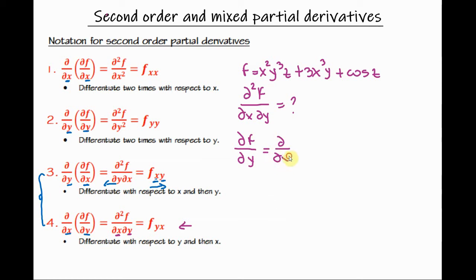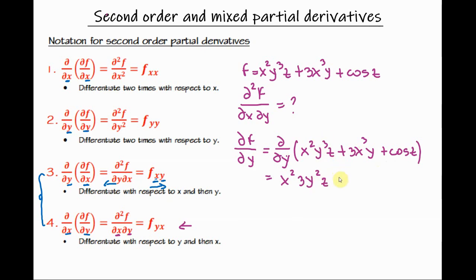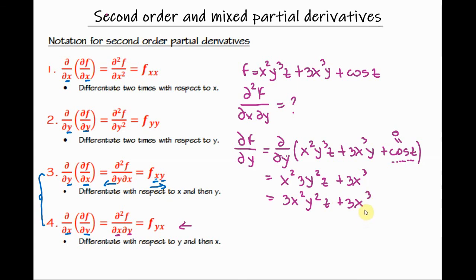Rewriting the function: x squared is a constant, the derivative of y cubed is 3y squared, and z is a constant. Next, 3x cubed is a constant and the derivative of y is simply 1, so we don't write it. For the cosine z term, since we are differentiating with respect to y, cosine z is a constant and its derivative is 0. Reordering, we get 3x squared y squared z plus 3x cubed.